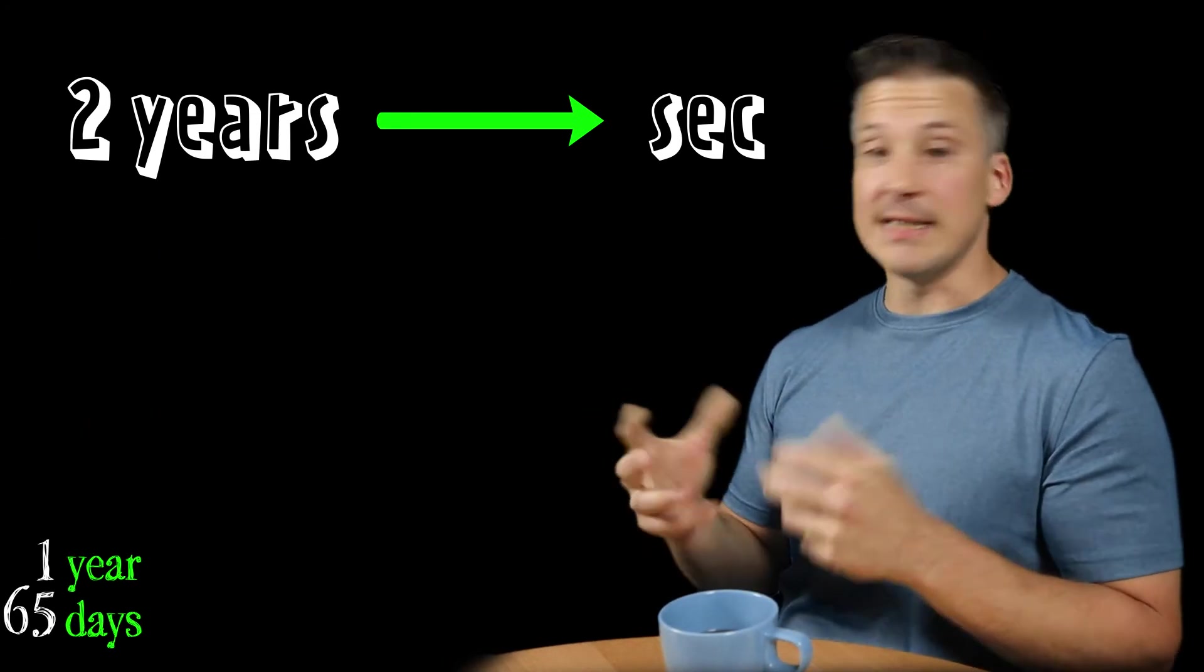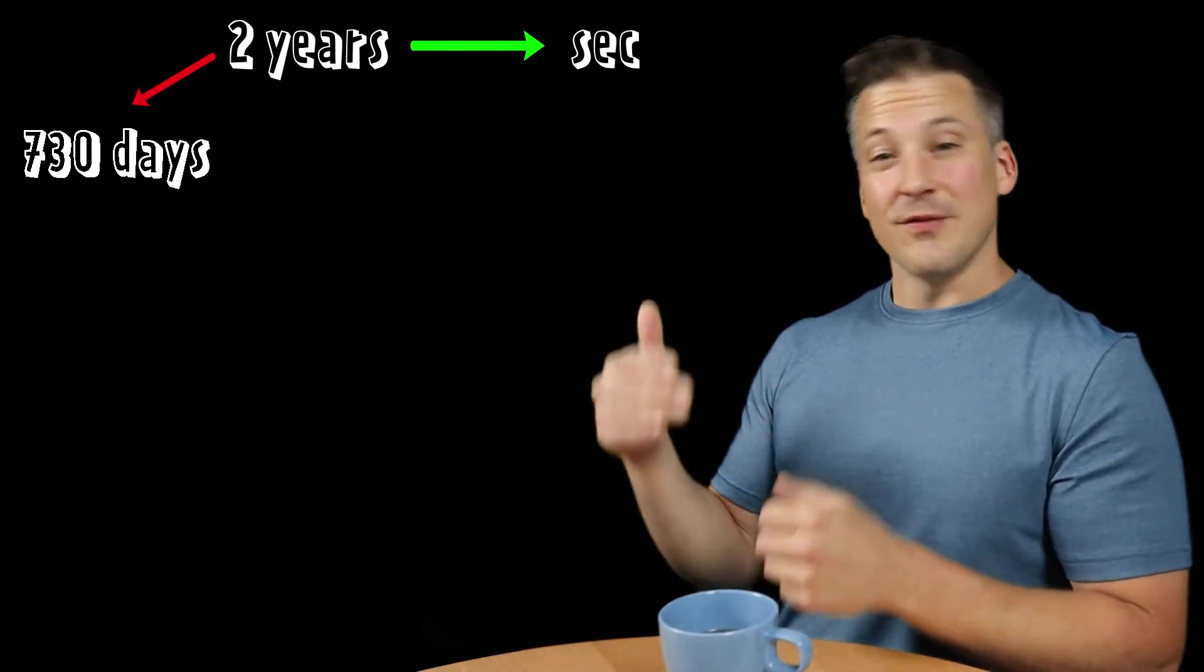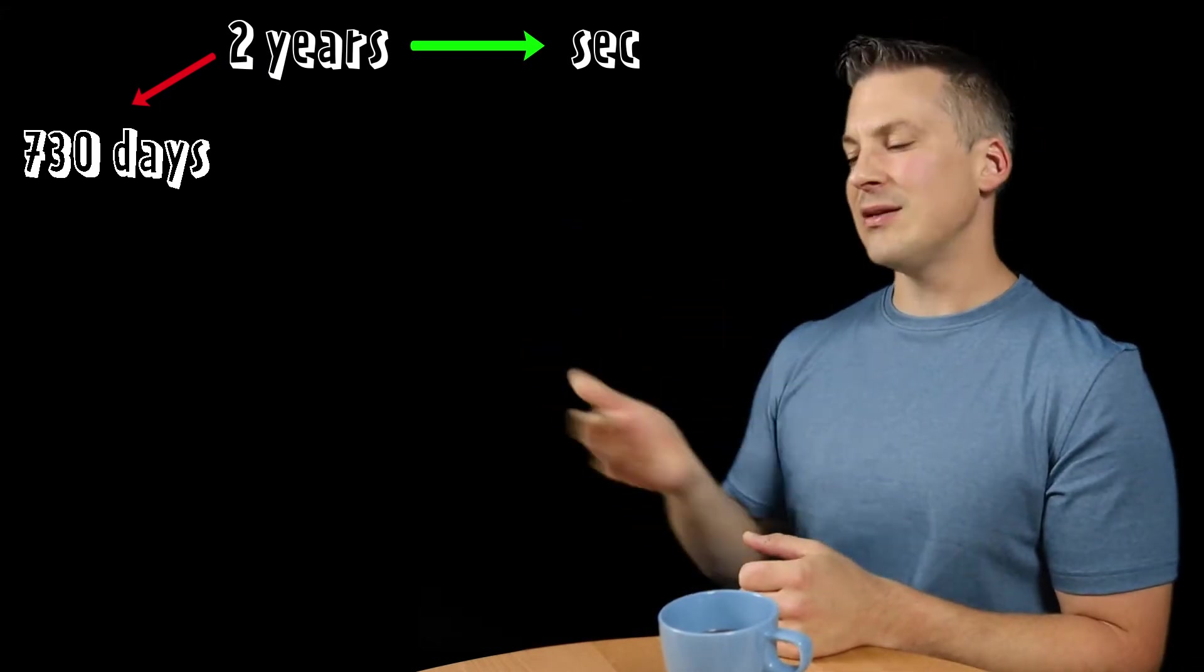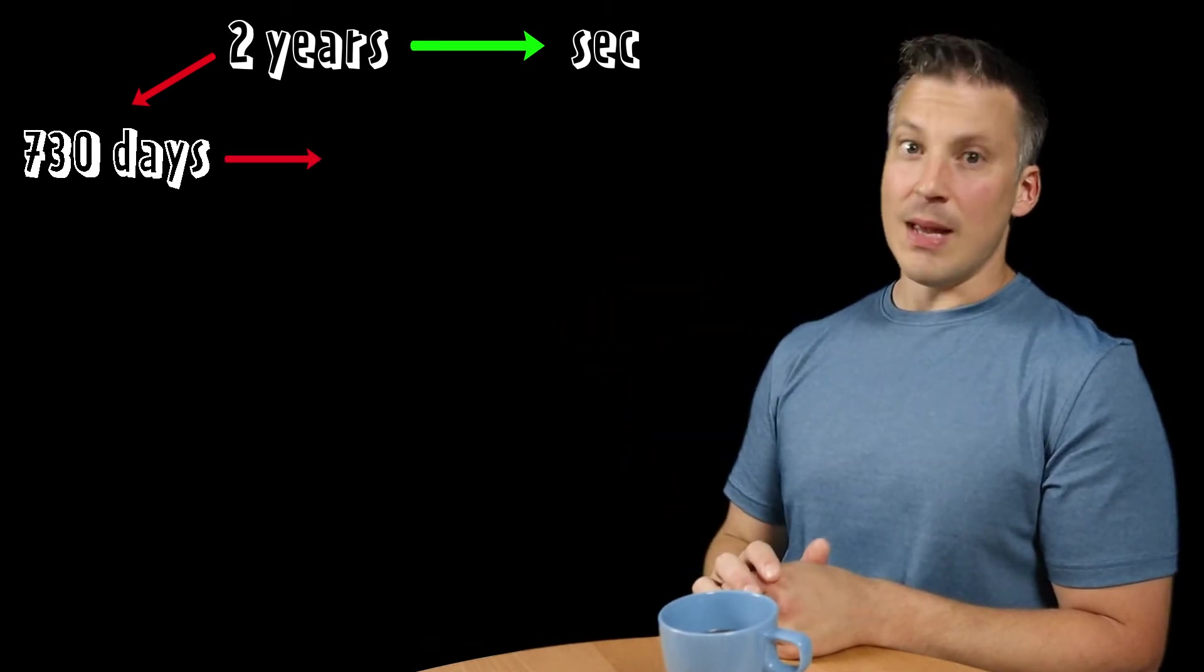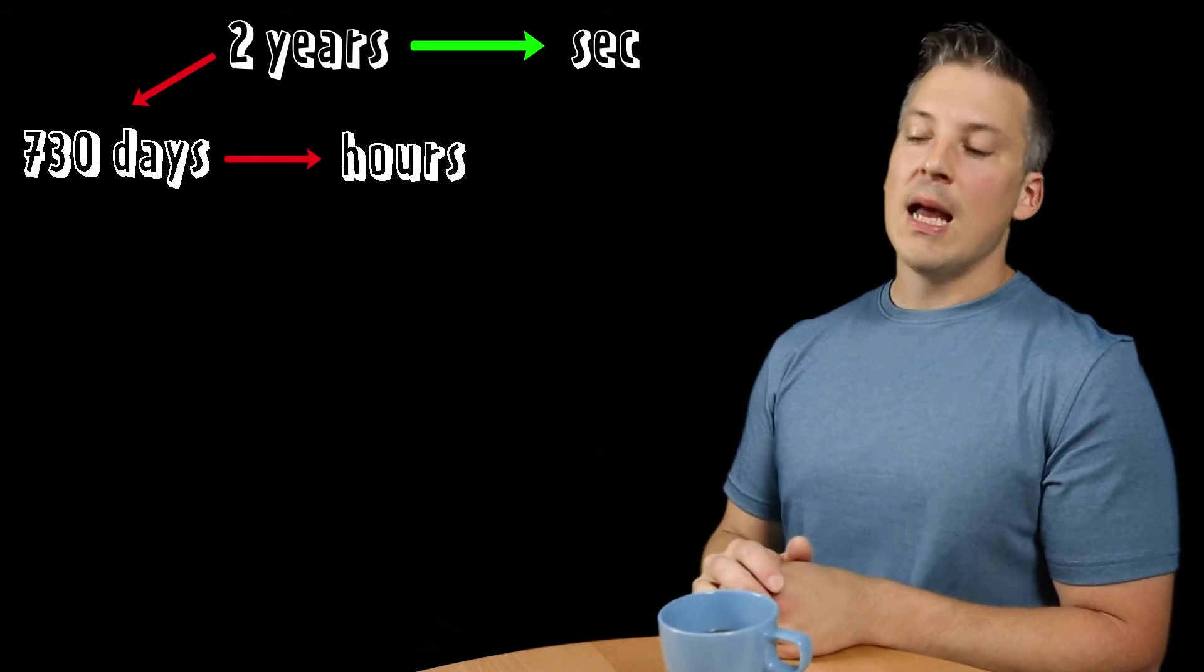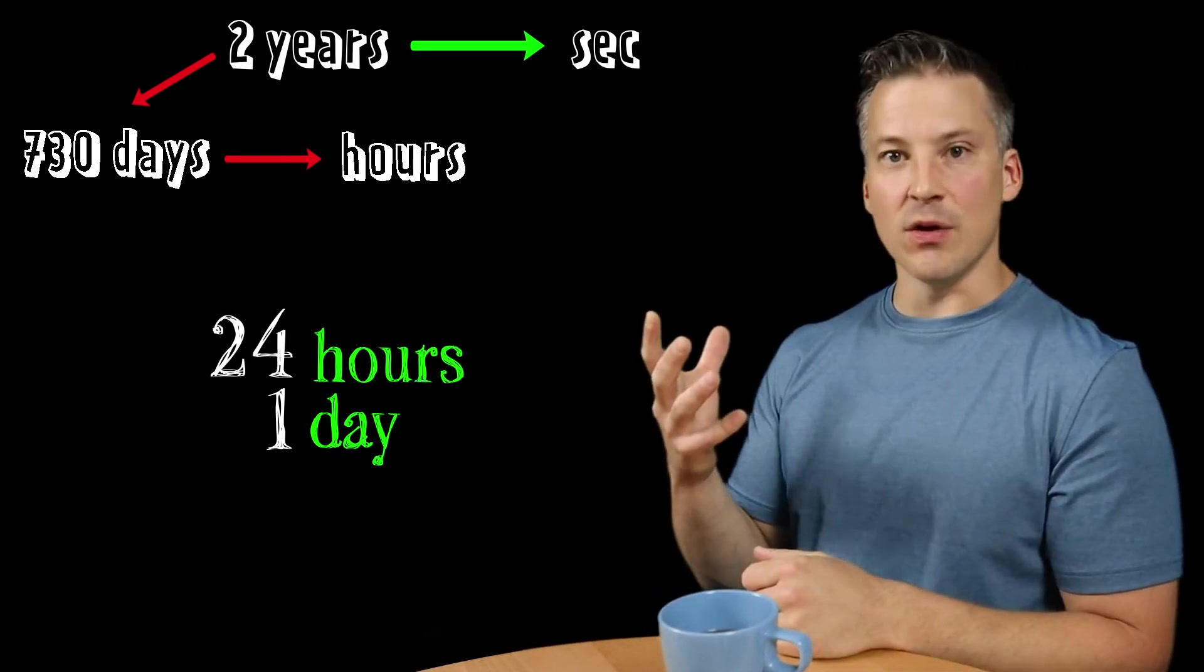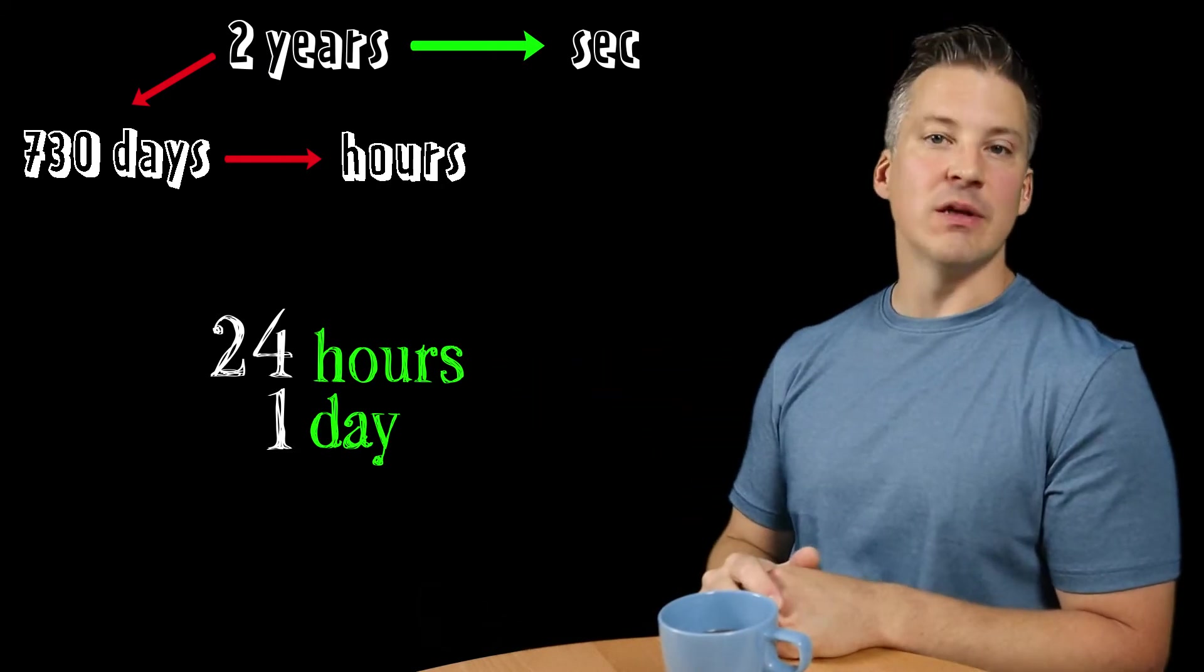Perfect. So now we've got days. Two years is equivalent to 730 days. So now I'm thinking, do I know a relationship between days and seconds, meaning how many seconds there are in a day or how many days there are in a second? And it turns out I don't know that off the top of my head. So we can't go to seconds yet. But what we can do is we can go to the next smaller unit of time. Maybe we know a relationship between days and hours. How many hours are there in a day? 24.